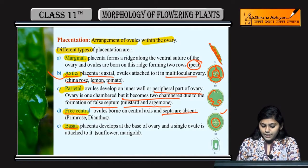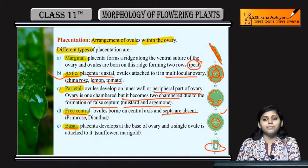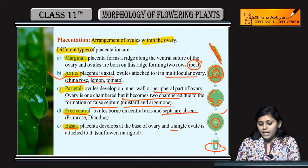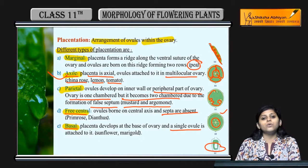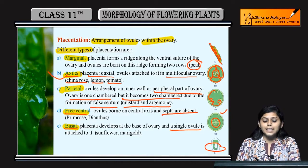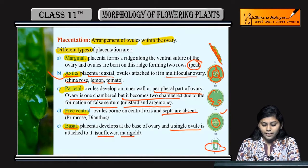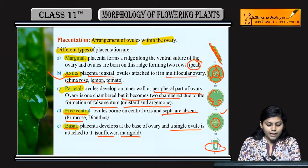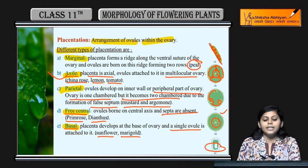Last one is basal. Basal mein kya hota hai — placenta develop karta hai at the base of the ovary, aur a single ovule is attached to it. Basal ka example hai sunflower and marigold. Free central ka example hai primrose and dianthus.